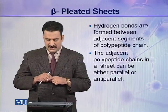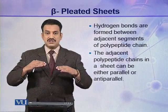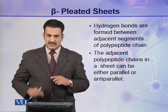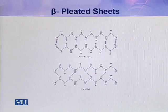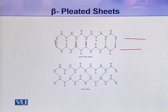The adjacent polypeptide chains in a sheet can be either parallel or anti-parallel. Here you can see two polypeptide chains arranged in a zigzag manner, and the hydrogen bonds are present between the adjacent polypeptide chains.